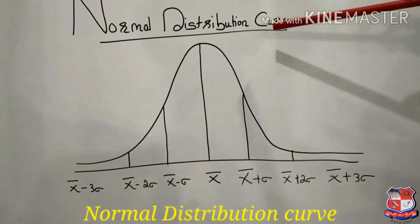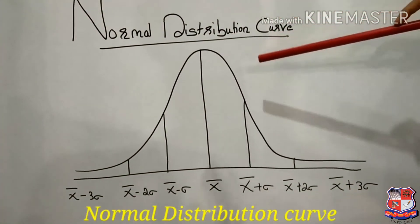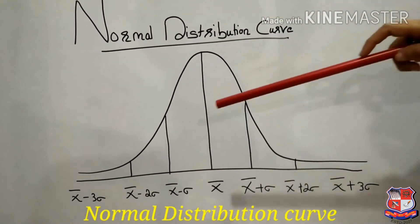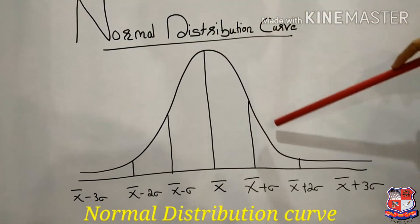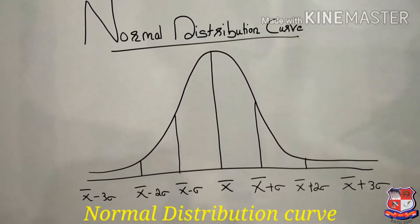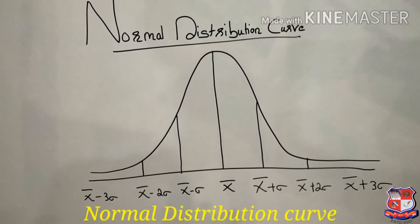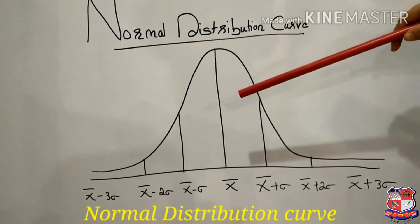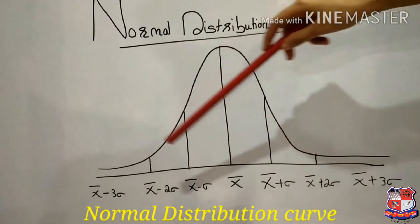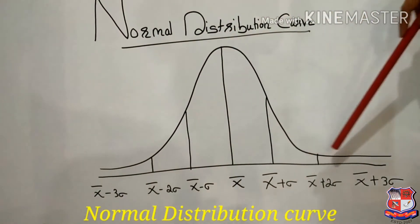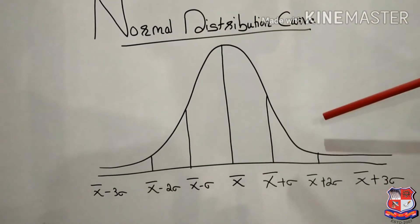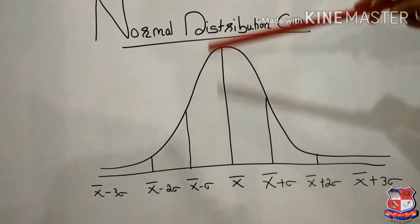This is the normal distribution curve, otherwise called the probability curve. It has a single peak and is bell-shaped. The normal curve extends three values to the left and three values to the right of the mean.